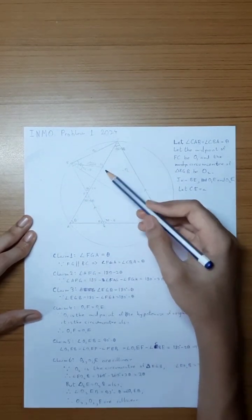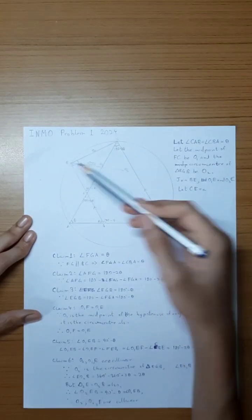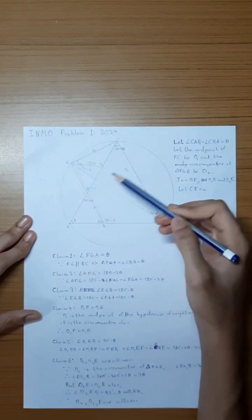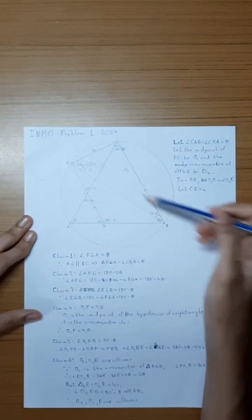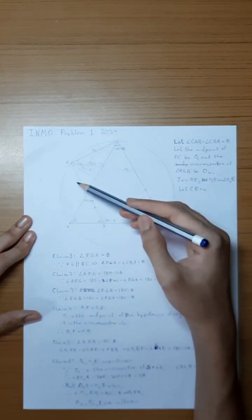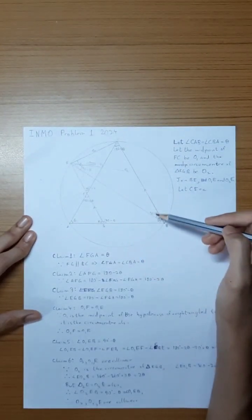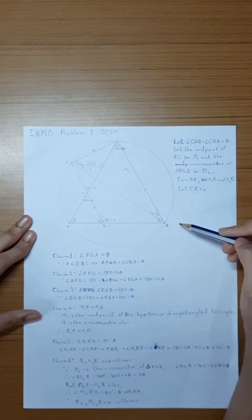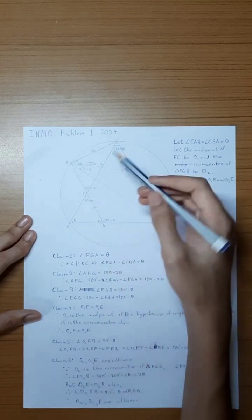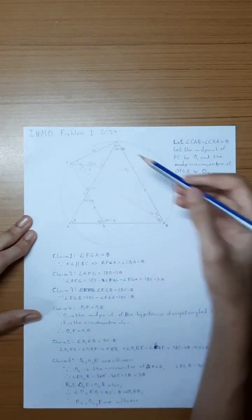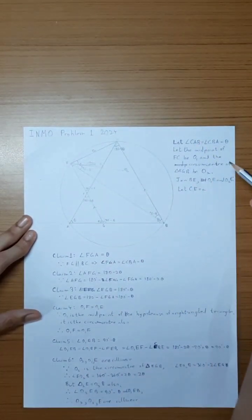Angle O1EB equals angle O1E minus angle CBE, since by parallelism angle FEB equals angle CBE. Calculating, we find that angle O1EB is equal to 90 degrees minus theta.